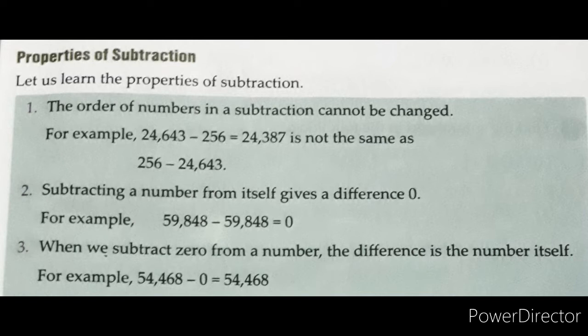The order of numbers in a subtraction cannot be changed. In subtraction, we cannot change the order of numbers. For example, 24,643 − 256 = 24,387 is not the same as 256 − 24,643. As you can see, when we put the smaller digit first to subtract, it is not possible. This means we cannot change the order of numbers in subtraction.